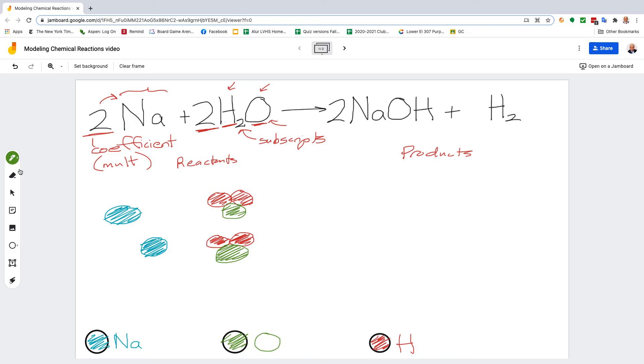Now I'm going to do the product side. It says there's two NaOH's, and that's one NaOH, so you need to draw one more. Remember, you don't draw them separately because it's not Na plus O plus H—it's NaOH. They're all together, there's no pluses in between those letters, so it's a compound NaOH chemically bonded together.